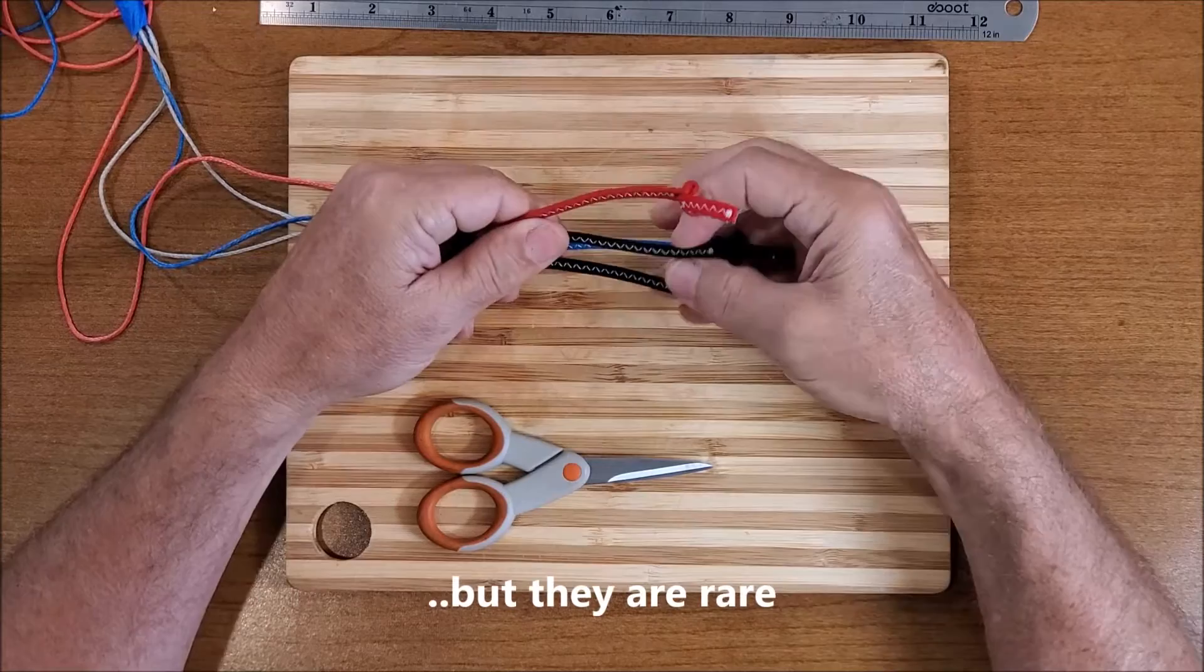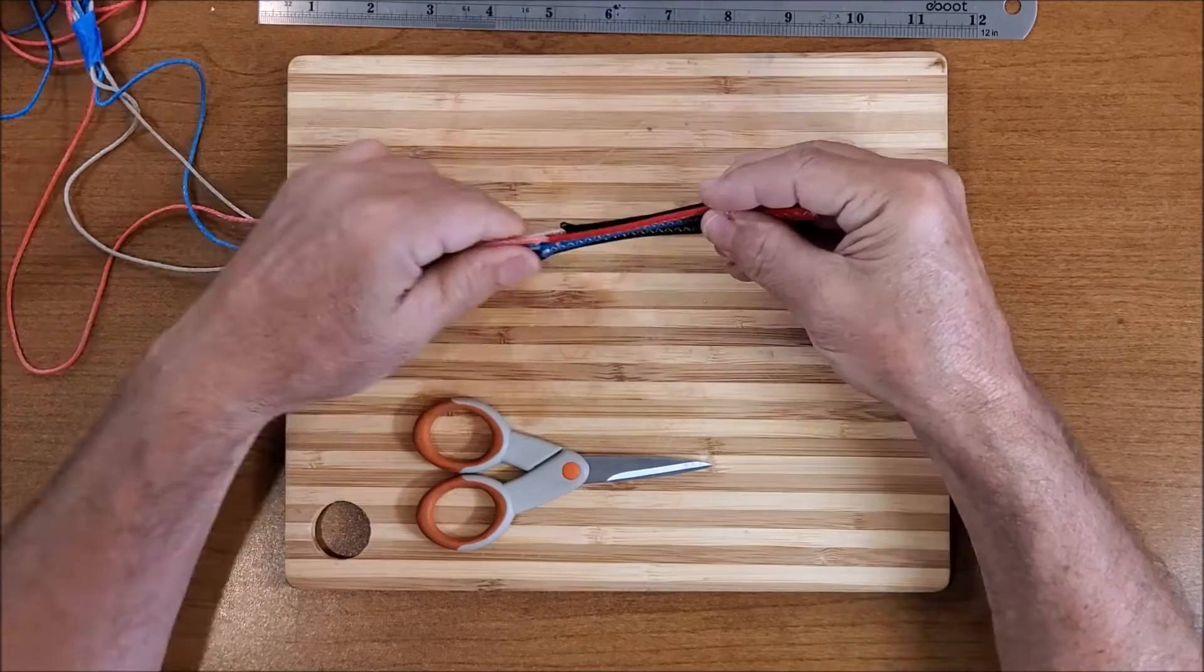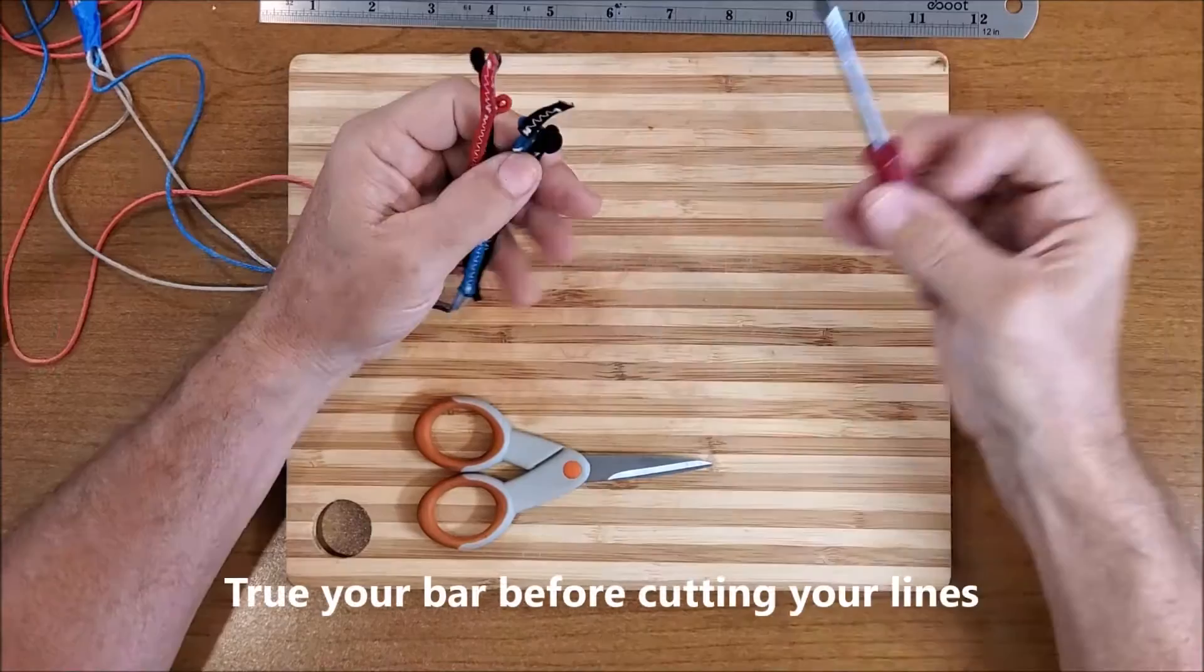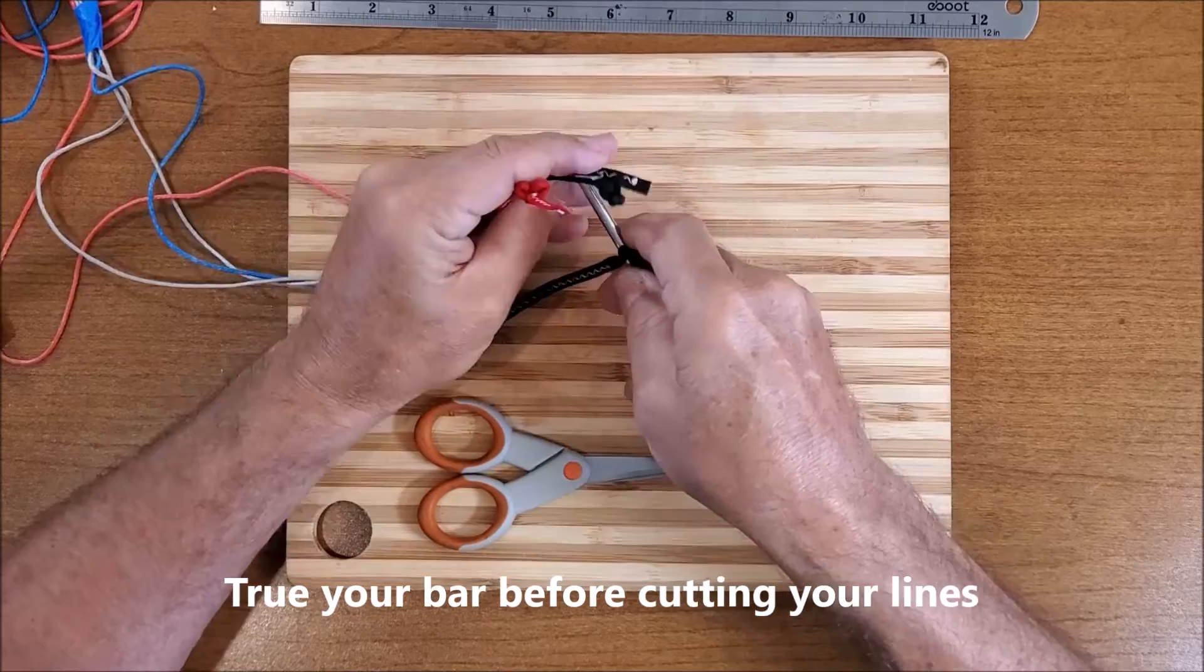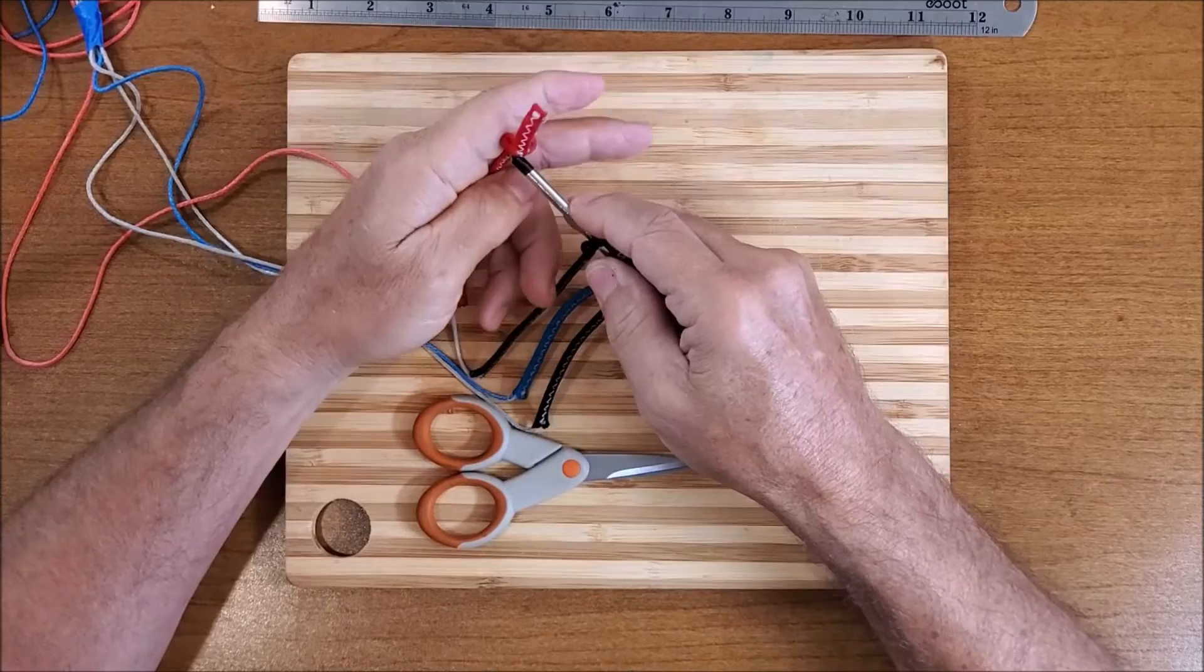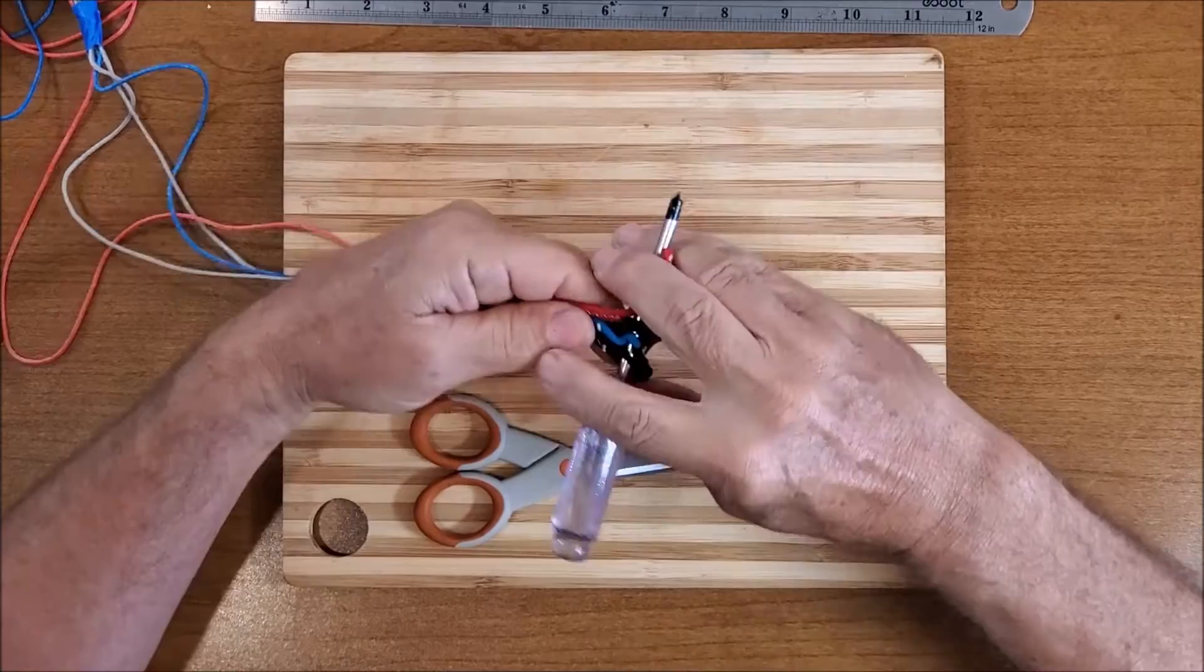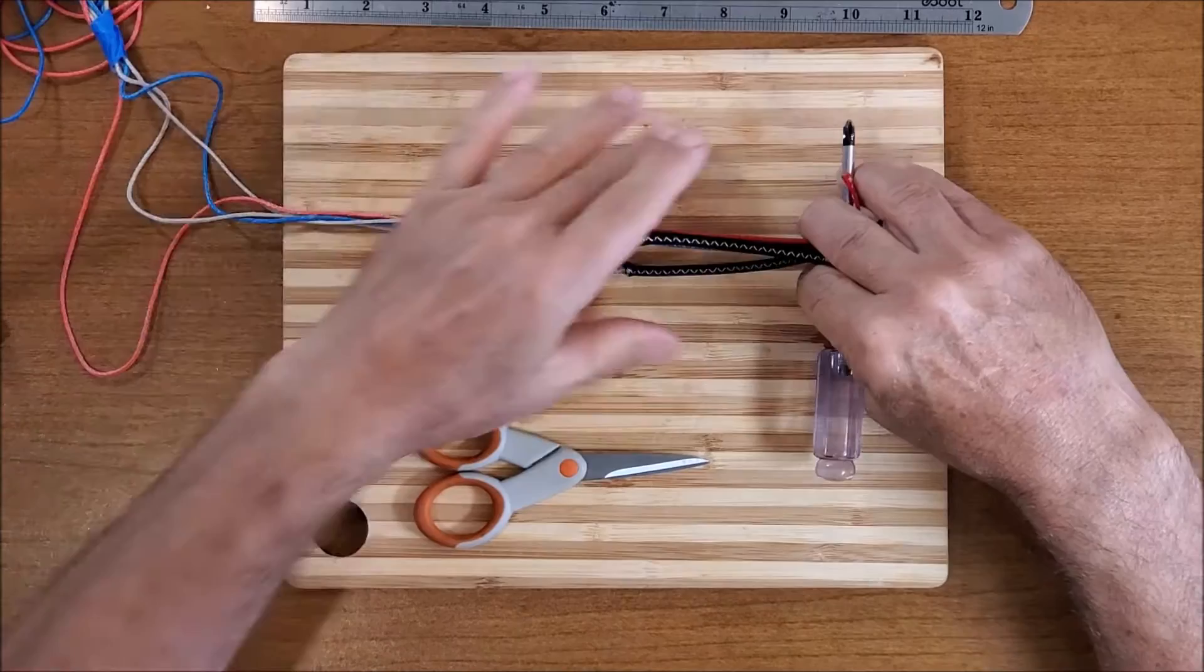So to cut down the lines, it's a fairly simple procedure. The first thing you want to do is true your bar. There are other videos on how to do that. But what you're going to be doing is getting all of your four kite lines together exactly the same distance. So if I put a screwdriver through them and then you're going to tie them to a fixed point like to a tree or something like that.